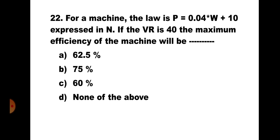Question number 22: For the same machine with law P = 0.04W + 10, if the VR is 40, the maximum efficiency will be: A) 62.5%, B) 75%, C) 60%, D) none of the above. Maximum efficiency = (maximum AMA / VR) × 100 = (25 / 40) × 100 = 62.5%. The correct answer is A) 62.5%.